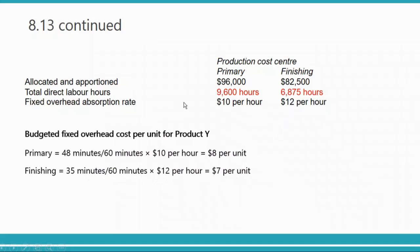Product Y passes through both primary and finishing departments, so we add both overhead amounts: $8 plus $7 equals $15 total overhead per unit of product Y. This question takes more time in the exam — you save time on short questions and invest it in longer ones like this. Practice it yourself at least once to retain it.